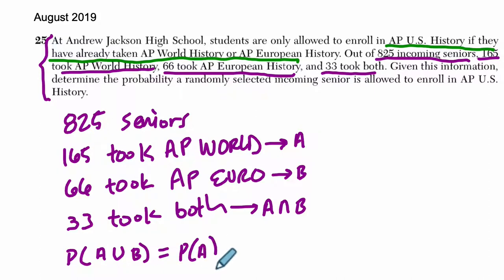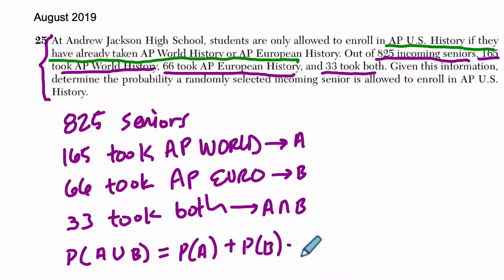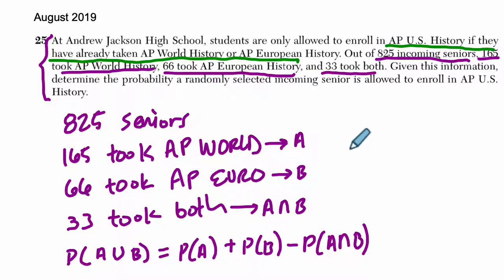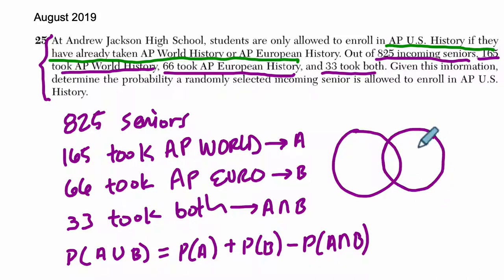The probability of A union B equals the probability of A plus the probability of B — that they were in World or Euro — minus the intersection, the probability they took both. We subtract not because we want to ignore people who took both, but because we'd be double counting. Let me show a Venn diagram with A and B.